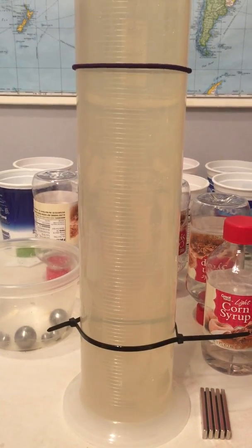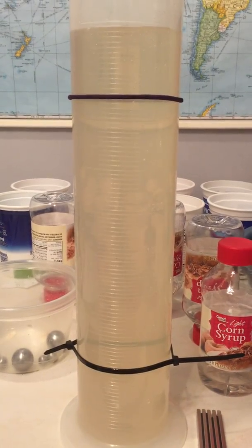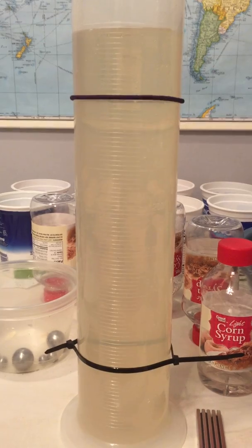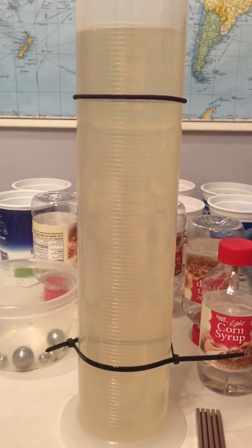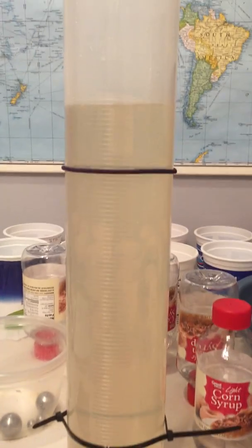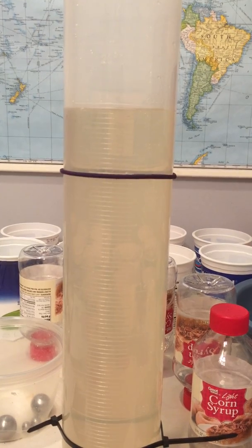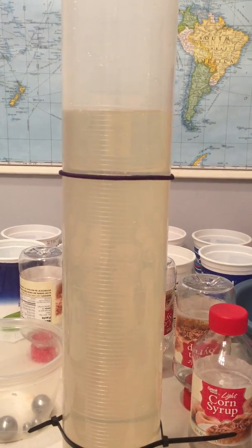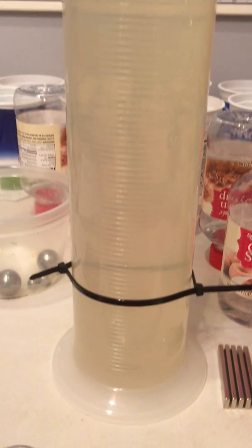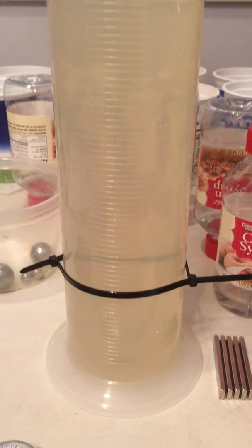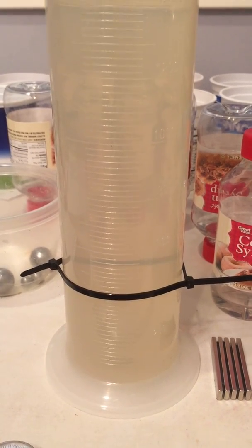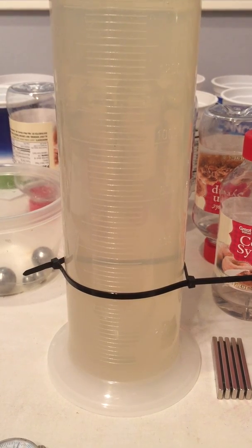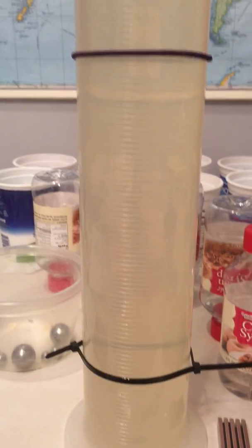Those bands are 25 centimeters apart and I measure that distance with a ruler. I leave a little room at the top so when I drop a sphere in, it's given some time in the fluid to reach terminal velocity. And I've got a little room on the bottom so that the wall effect, as the sphere approaches the bottom and the drag force changes, doesn't impact the fall time.